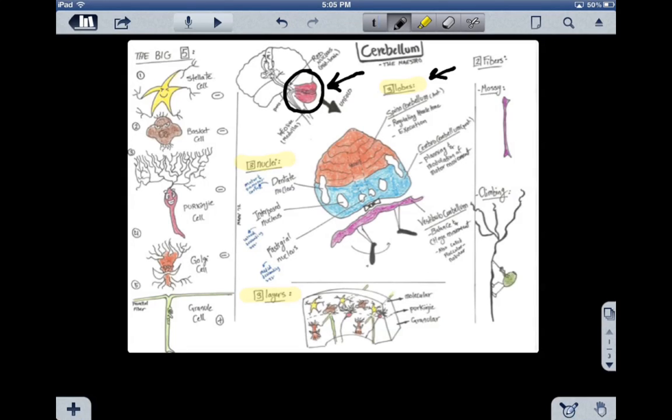The second lobe is the cerebrocerebellar lobe, also called the posterior lobe, the blue region in this figure. Its major function is planning and modulation of movement.